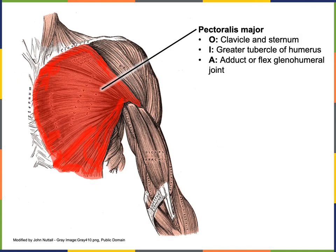The origin of pectoralis major is along the clavicle as well as along the sternum. The insertion of pectoralis major is on the greater tubercle of the humerus. The action of pectoralis major is to adduct or flex the glenohumeral joint.